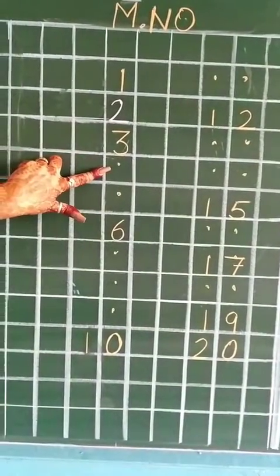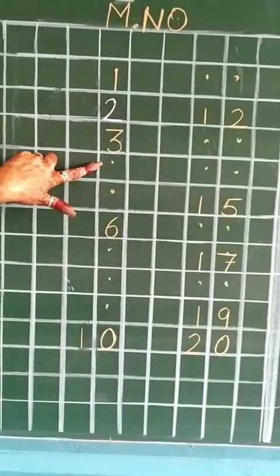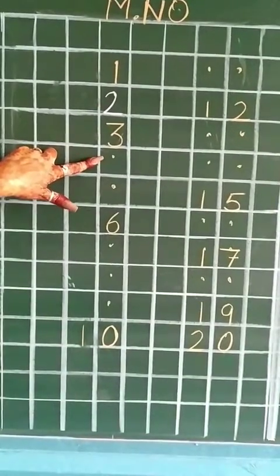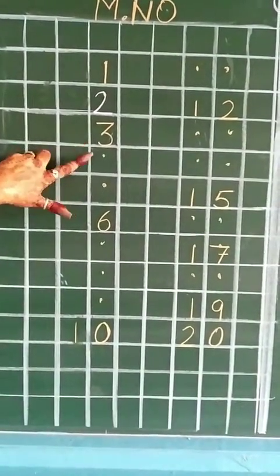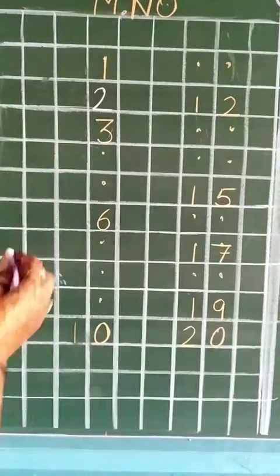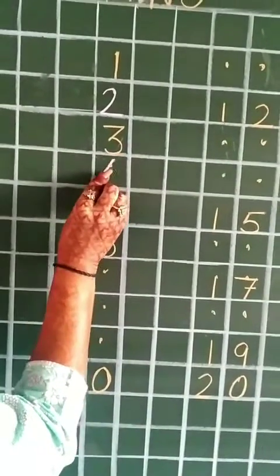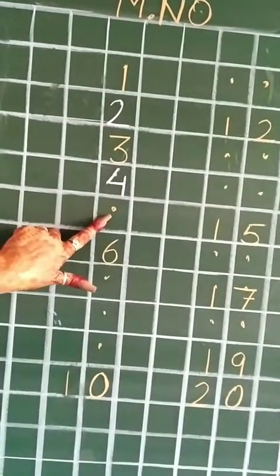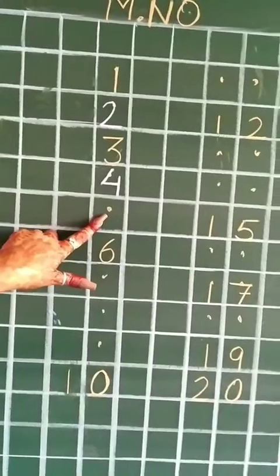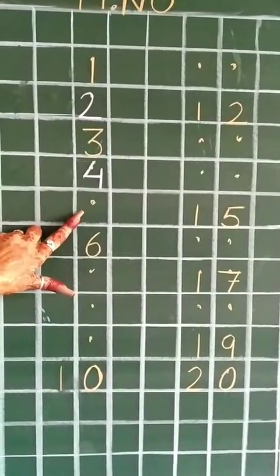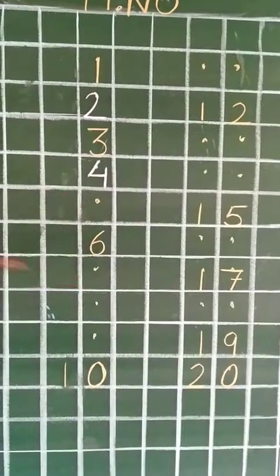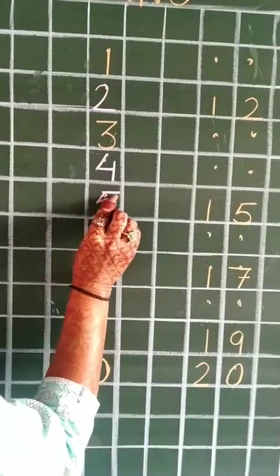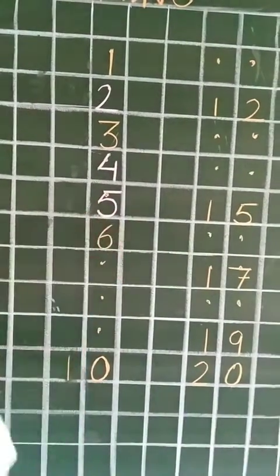Three ke baad kya aata hai? Four, very good. So we will write four here. Again the next box is empty, so we have to fill in a number. Four ke baad kya aata hai? Five. Sleeping line, slanting line and curve, five.